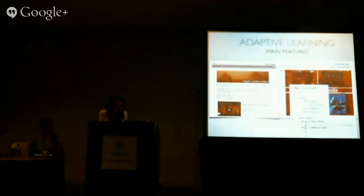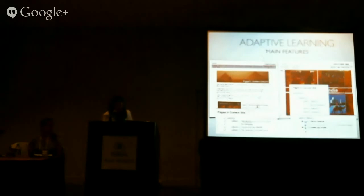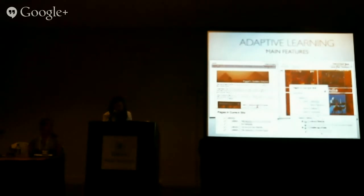The next feature is the index of pages. It was important to be able to keep track of students' work. In the old lessons tool, the index showed only pages and subpages. Now with the new index, you can see pages, subpages, and by clicking on a page you can also see the content within that page and whether content is required or not. In this case, this content is required before another item can be released, and students can easily keep track of that. When a lesson is completed, you get a green check mark.